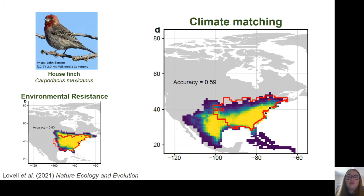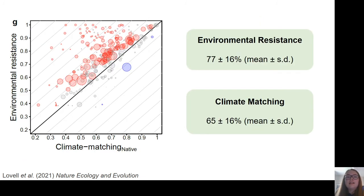For the house finch, this climate matching model didn't perform very well, predicting the range with an accuracy of only 59%. Across all species, this model performed significantly worse than the environmental resistance model, with an average predictive accuracy of only 65%. On the plot, the x-axis is now the climate model, and as you can see, for most species environmental resistance was better. This climate model was actually worse than a model of random dispersal. Some of our other climate models did perform better than this one, but they required information that would not be known before an alien species had spread. Even then, the environmental resistance model was significantly better than all of the climate models we ran.